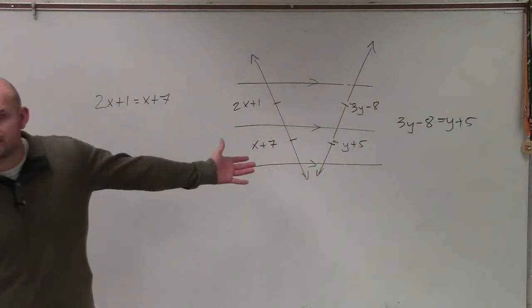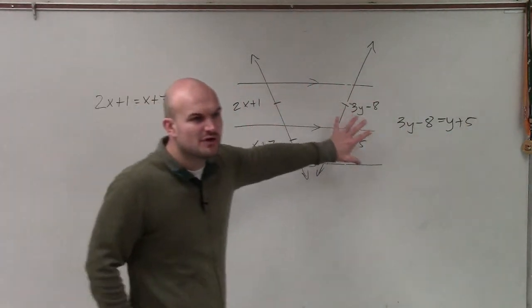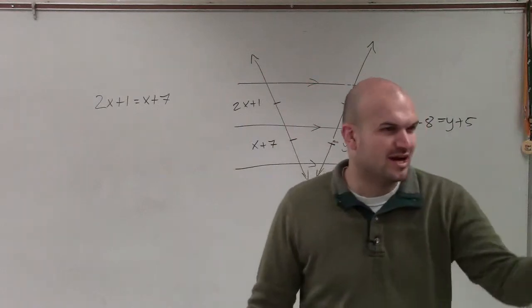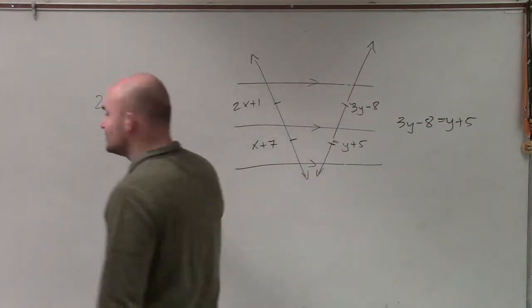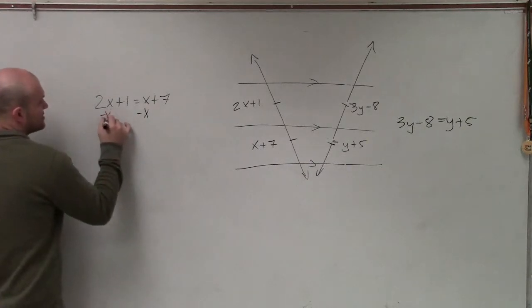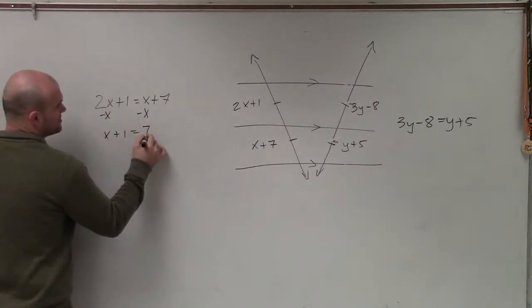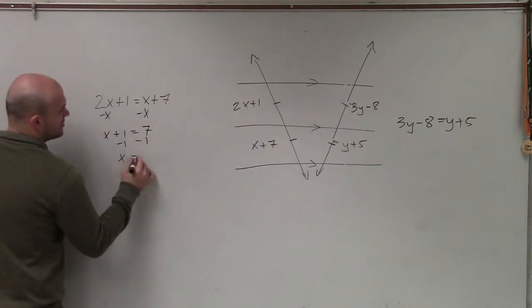So now, can I solve this? Because this is right off of your congruent parts of parallel lines, right off the notes here that you had from last class period. So now I can just solve this. Subtract x, subtract x. X plus 1 equals 7. Subtract 1. X equals 6.